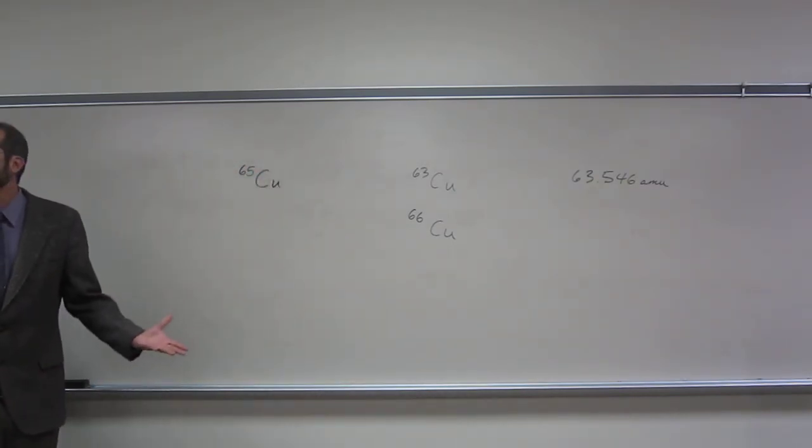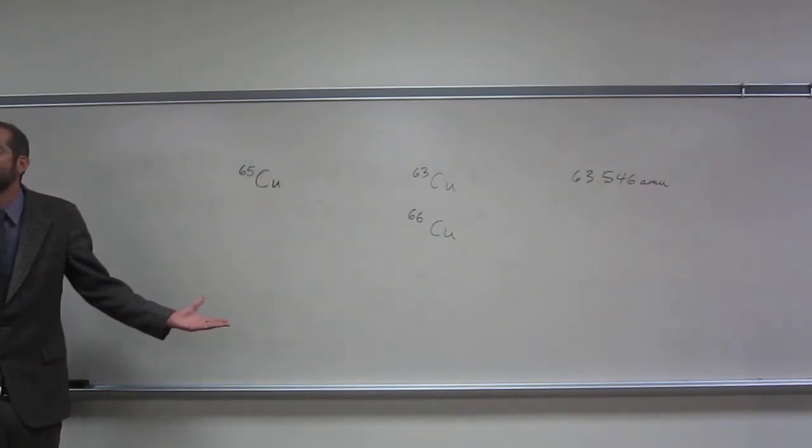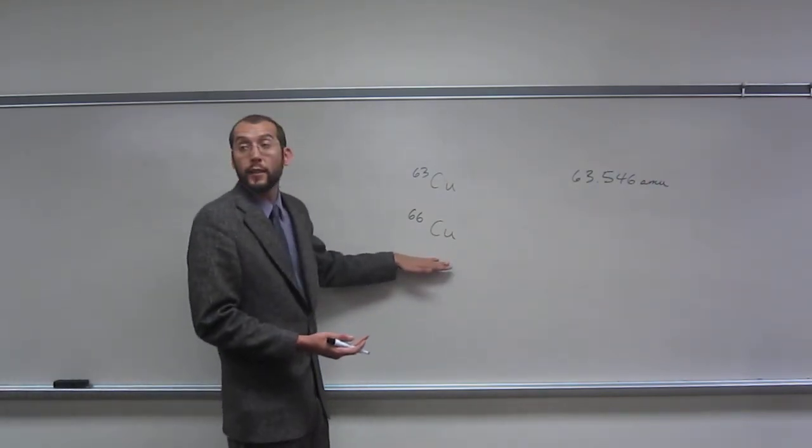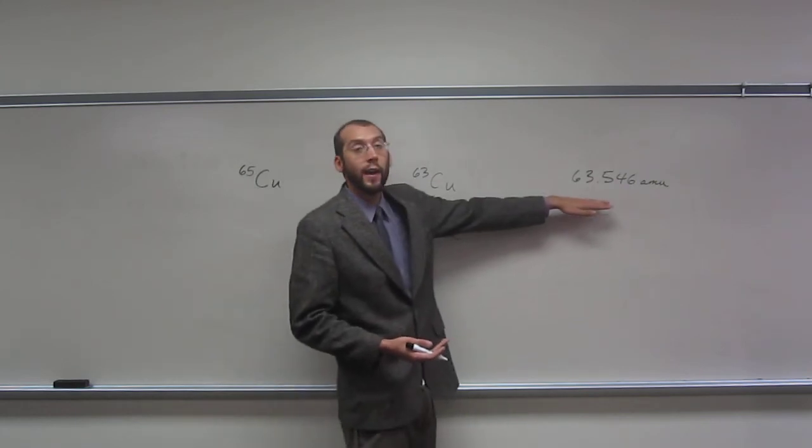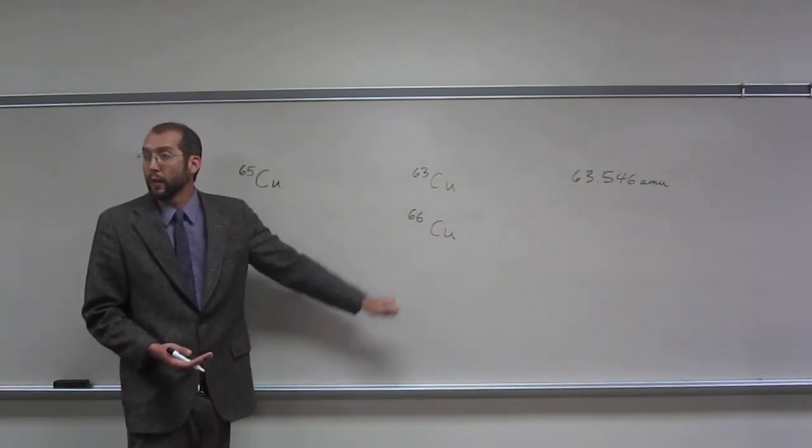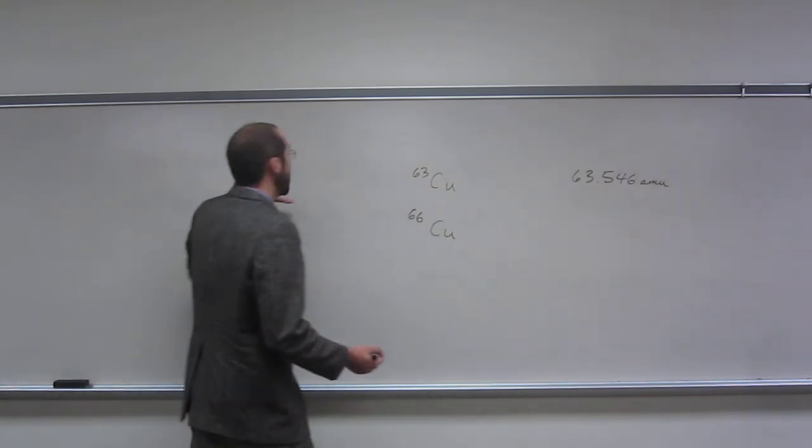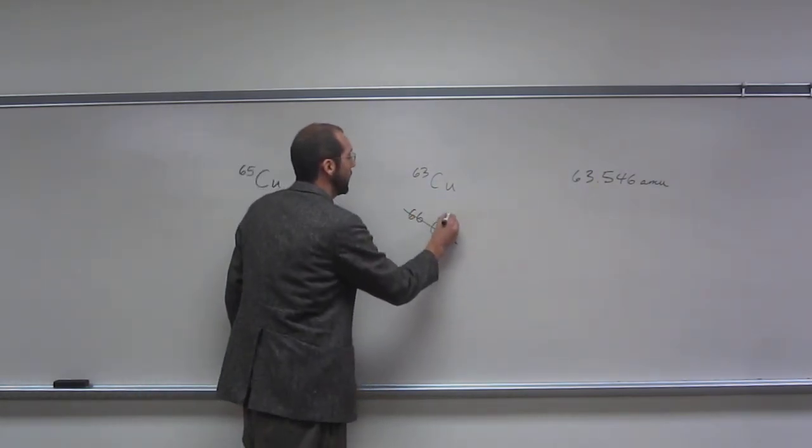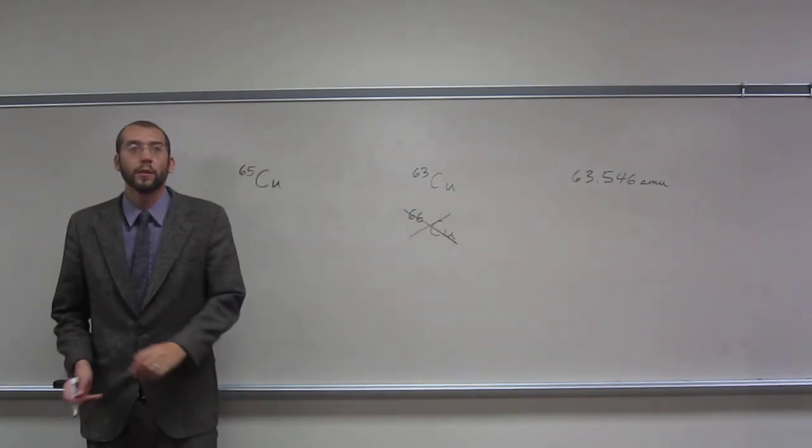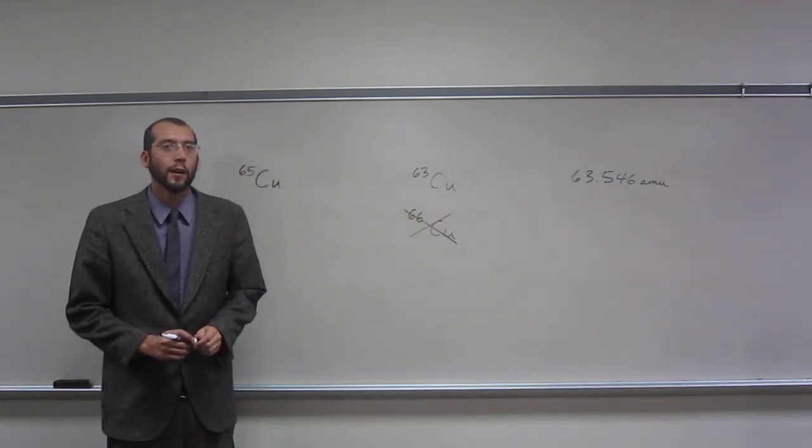63. Why is that? It's got to be in between. Yeah, it's got to be something in between. Because if it was 66, right, then you would expect this average mass to be in between 65 and 66. Does that make sense? So since it's in between 63 and 65, we can with confidence say that the other isotope is copper 63. Is everybody okay with that?